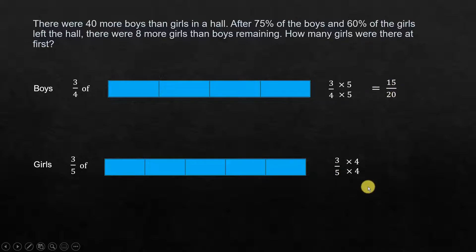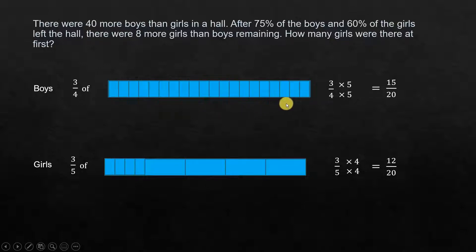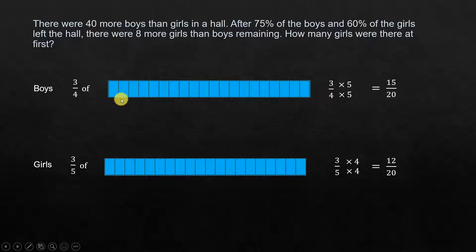This gives us 15 over 20 for boys and 12 over 20 for girls. What this means is: we had 4 parts for boys, and each of those 4 parts is divided into 5 smaller units, giving 20 units total. For girls, we had 5 units, and each is divided into 4 smaller units, also giving 20 units total. Now we are able to compare them easily.